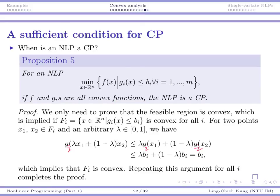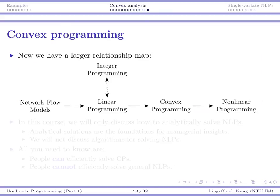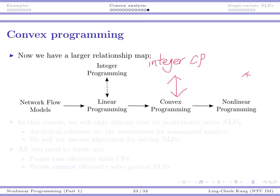Note this is a sufficient condition — it's possible that some functions are non-convex but the NLP is still a convex program. We now have a larger relationship map: network flow is a special case of linear programs; linear programs are special cases of convex programs; convex programs are special cases of nonlinear programs. Integer programs are somewhat special — integer convex programs and integer nonlinear programs exist, but both fields are extremely hard and are not covered in this course.